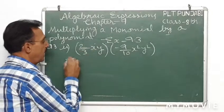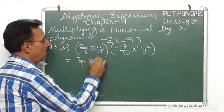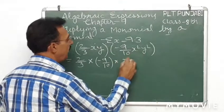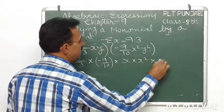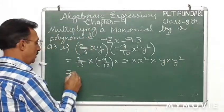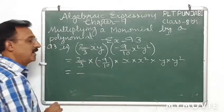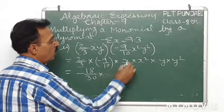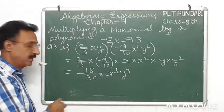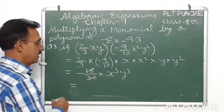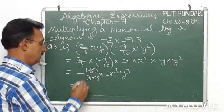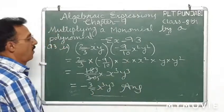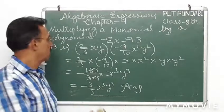The coefficients are two over three into minus nine over ten. Plus into minus is minus. Two into nine is eighteen over thirty. X multiplied by x squared, y multiplied by y squared. So minus over ten, x raised to power 3 and y raised to power 3. Cutting by 6, 18 by 6 is 3, 30 by 6 is 5. So the answer is minus three over five x cubed y cubed.